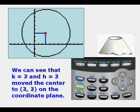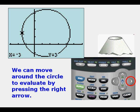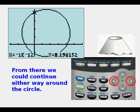We can evaluate points on the circle by pressing Trace. We can move around the circle to evaluate by pressing the right arrow. From there we can continue either way around the circle with either right or left arrow.